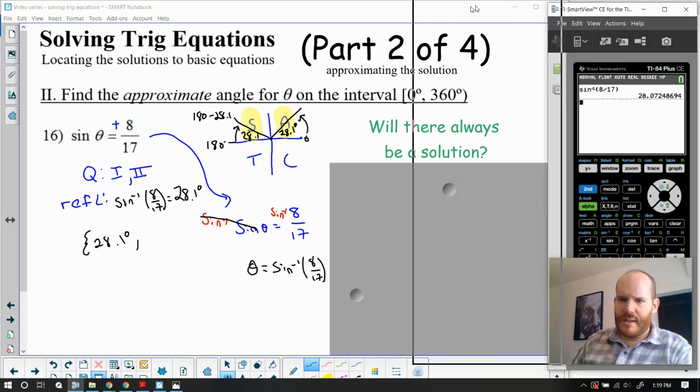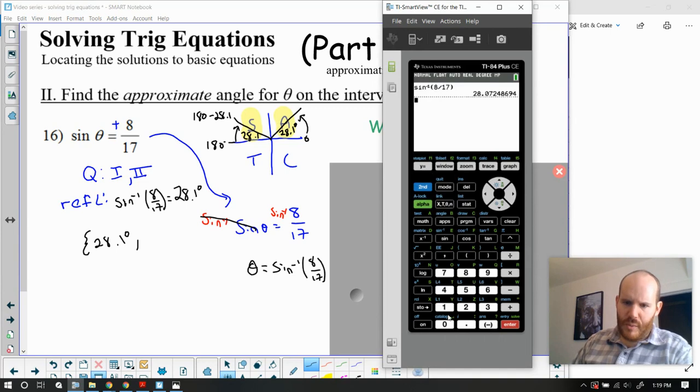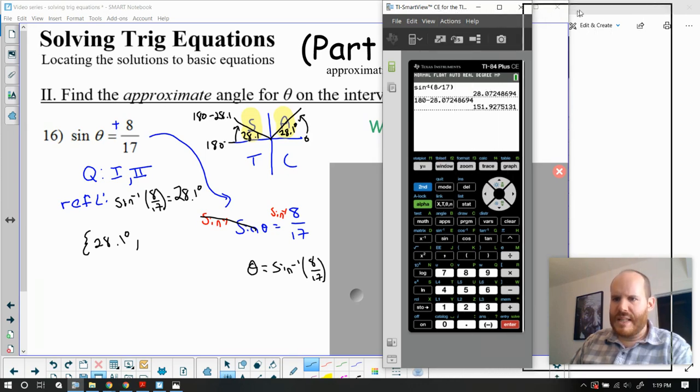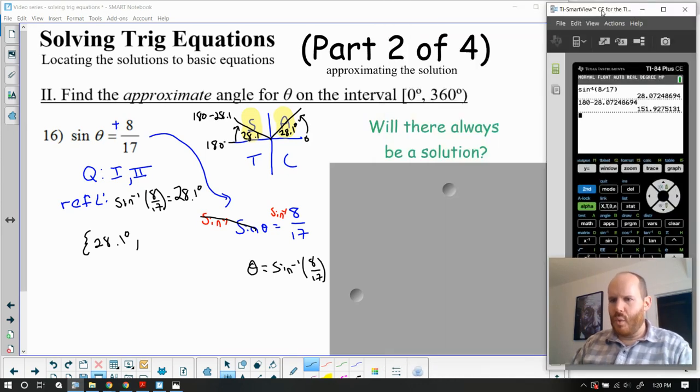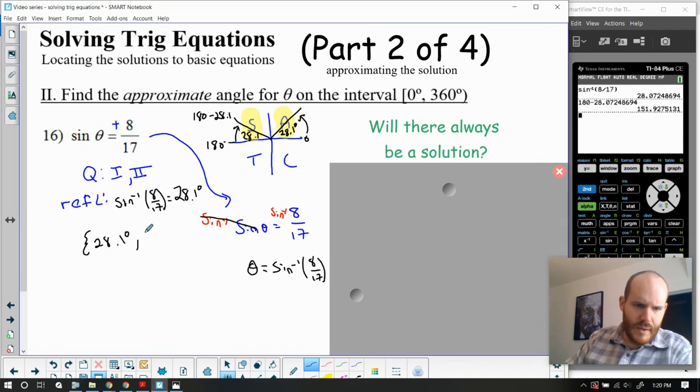Now you can use the calculator kind of creatively to help you along the way. So I'm going to do 180 minus, and then I'm just going to go up and highlight this number and hit enter. And it's going to pull that number down for me. I'll hit enter again, and that'll give me my second quadrant solution. So 151.9 degrees.